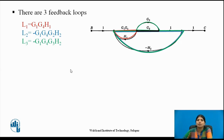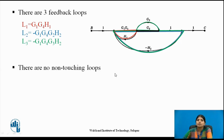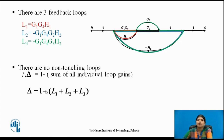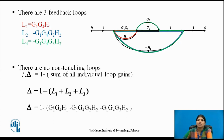There are three feedback loops and no non-touching loops. Calculate Δ = 1 − (sum of all individual loop gains). Therefore Δ = 1 − (L1 + L2 + L3), where L1, L2, L3 are the respective loop gains written out.